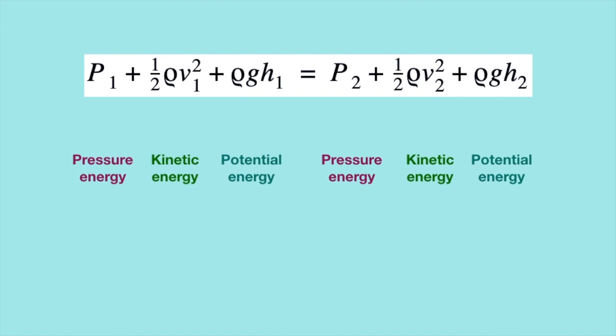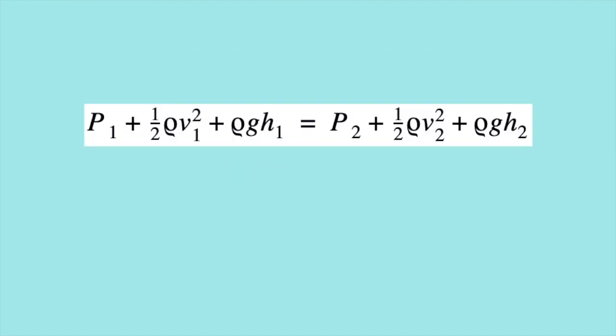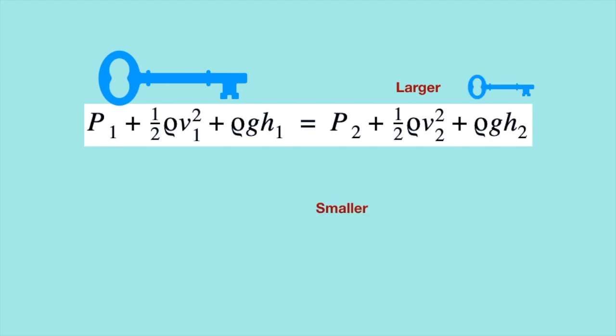My pen has more potential energy here than down here. As we can see, the sum on the left side — pressure energy plus kinetic energy plus potential energy — equals the sum of the three energies on the right. So it looks like a kind of energy conservation law. If we keep the left-hand side fixed and make the second term on the right — kinetic energy — larger while the third term stays put, then the first term, pressure energy, must go down.